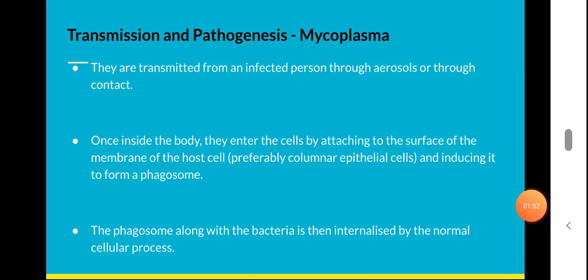Mycoplasma genitalium is transmitted through contact. Once inside the body, these organisms enter the cells by attaching to the surface of the membrane of the host cell — preferably attaching to the columnar epithelial cells.